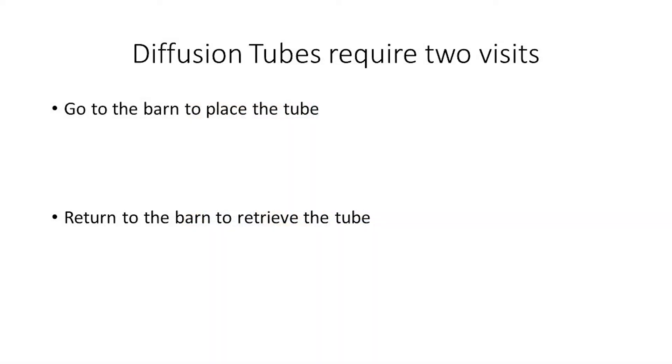One disadvantage of the diffusion tube process over pull tubes is the need for two visits to the animal environment hours apart to place the tube and to retrieve the concentration reading.